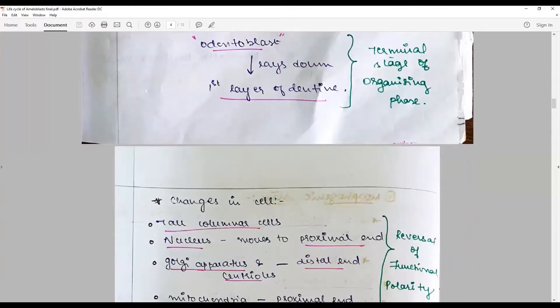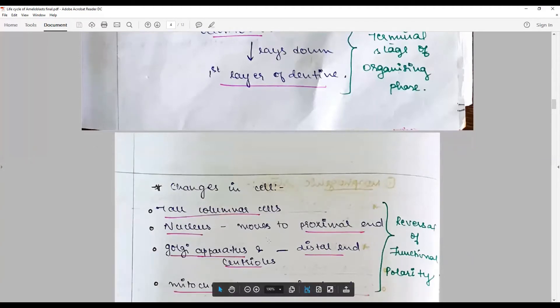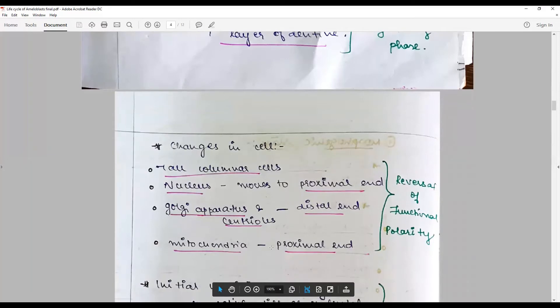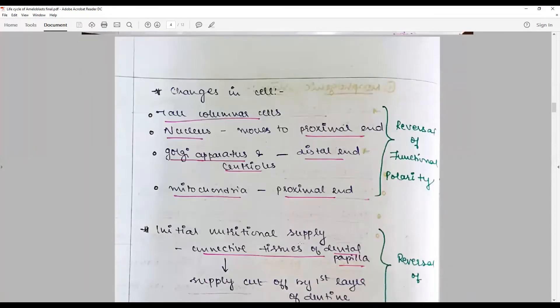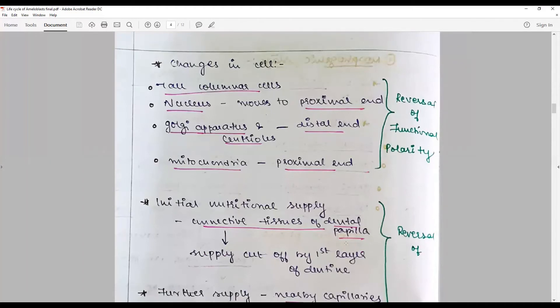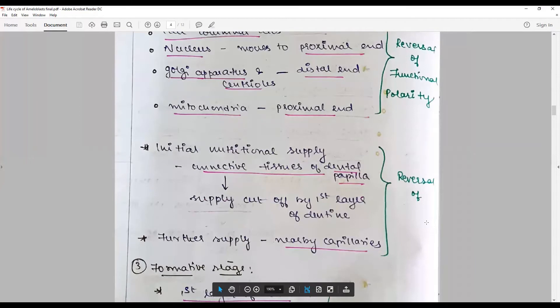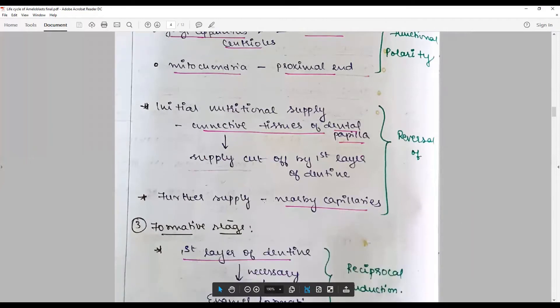The changes in the cells are that the cells become tall columnar, the nucleus moves to the proximal, and the Golgi apparatus and centrioles are posted towards the distal end. Mitochondria are increasingly concentrated towards the proximal end, and this is called the reversal of functional polarity. The initial nutritional supply was the connective tissue of dental papilla. When the first layer of dentin is formed, that supply is cut, and this is called the reversal of nutrition. Further supply is by the nearby capillaries or the stellate reticulum.